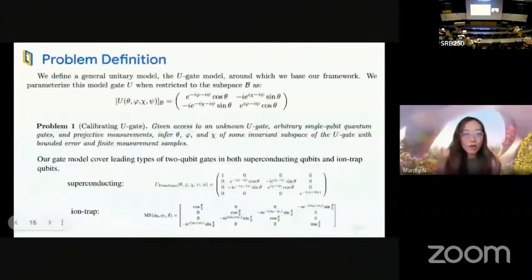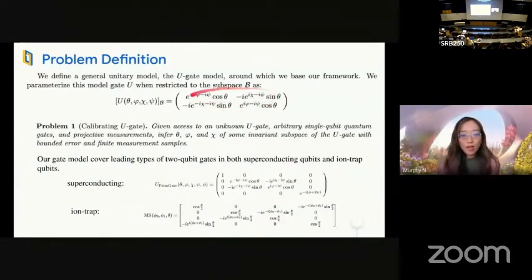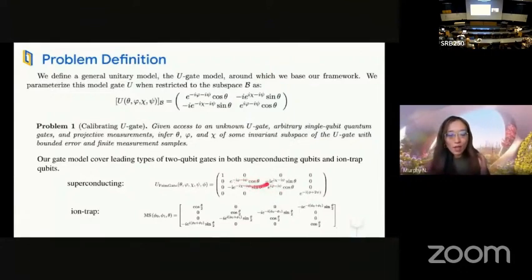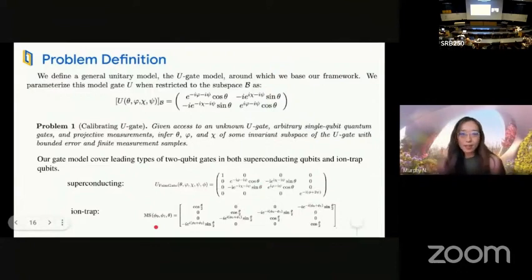That leads me to our quantum metrology algorithm based on QSP. We start by defining the problem where we want to learn an arbitrary two-by-two unitary. Learning this unitary allows us to learn most of the two-qubit gates available. For example, in a superconducting system, the two-qubit gates have this type of particle conserving structure that is a block diagonal into a two-by-two matrix. So we only need to learn two-level unitary at a time. Similar for ion traps, Mølmer-Sørensen gate. The problem is if you give me this type of U-gate or two-level gate, an arbitrary single-qubit gate and projective measurement, our task is to infer all the parameters in this gate.